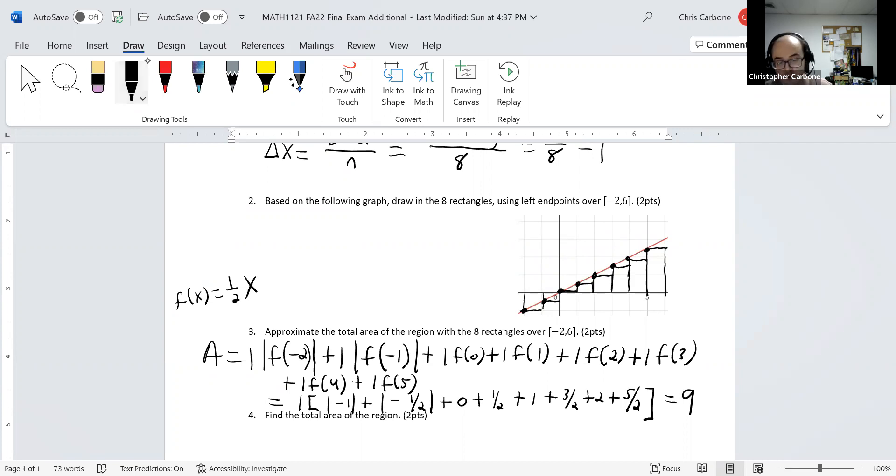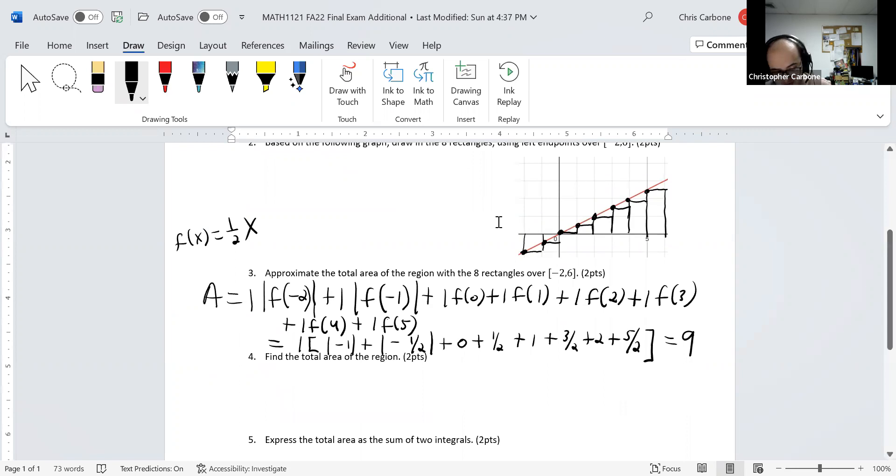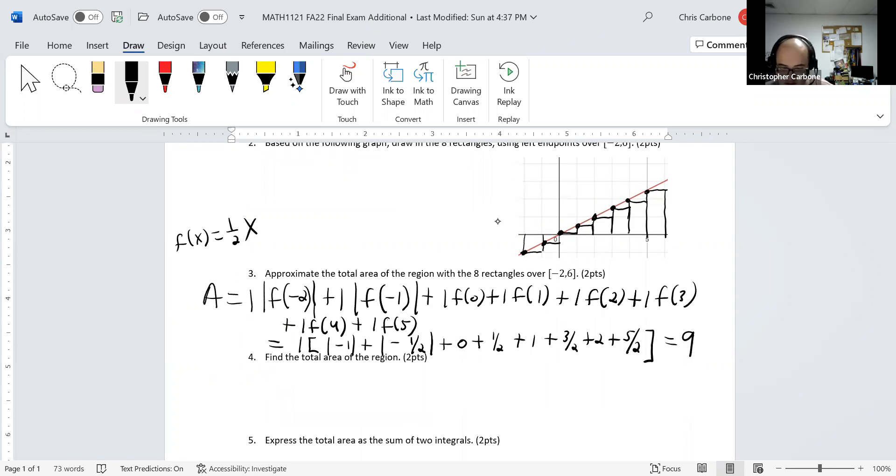For the fourth part, we want the total area of that region. So, if we call the portion here below the x-axis the first area, and the portion above it the second, we can approximate this by adding those two areas, a sub 1 plus a sub 2. So, this first one here is, as I highlight that triangle, it has a base here of 2, a height of 1. So for that first area, this would be one half times 2 times 1.